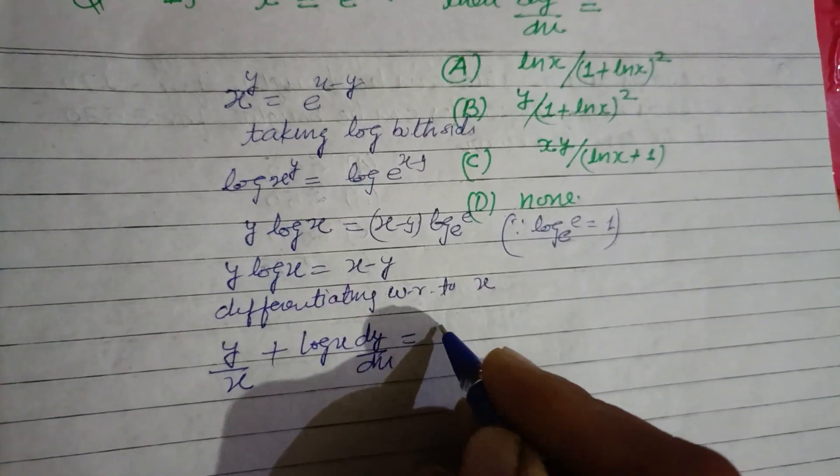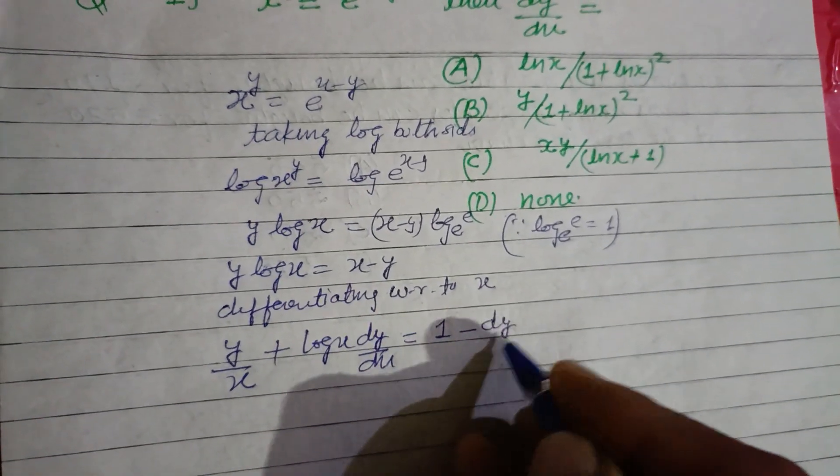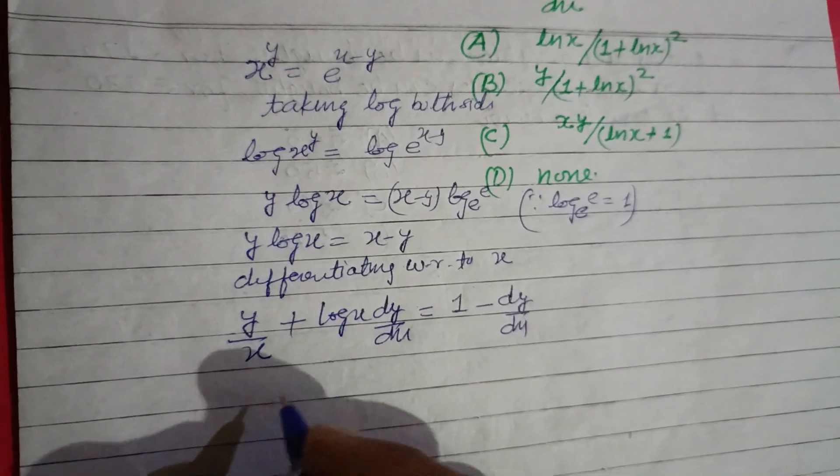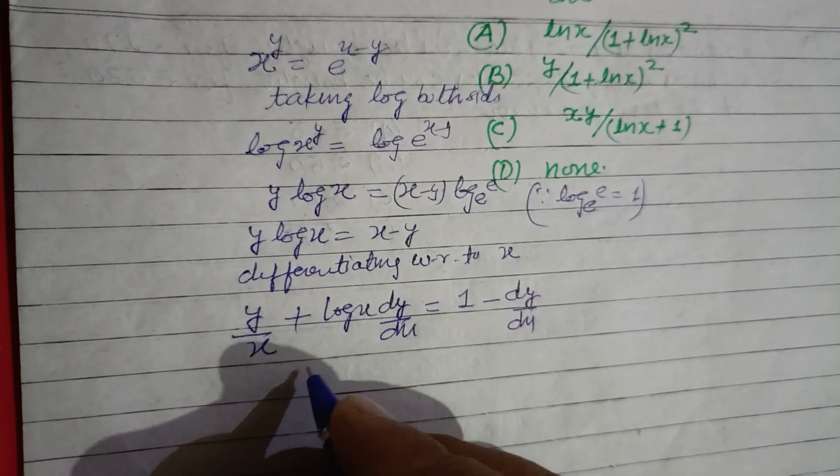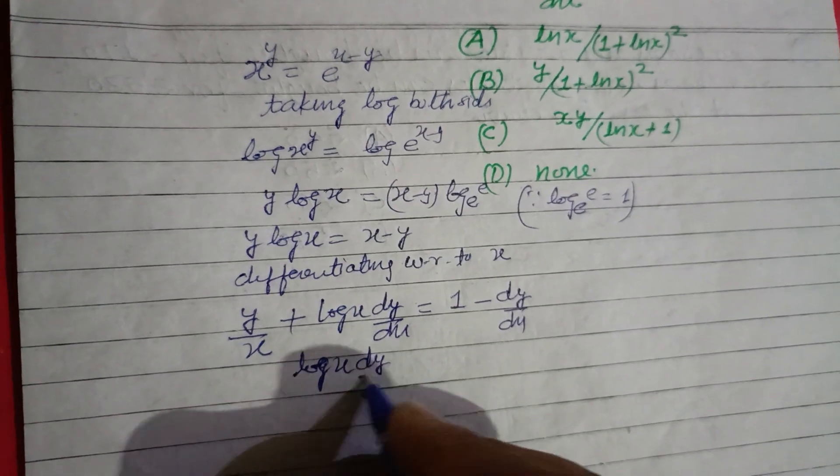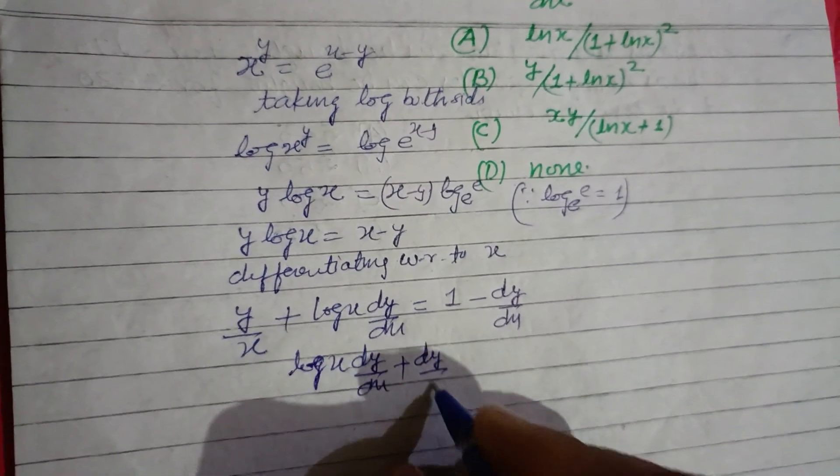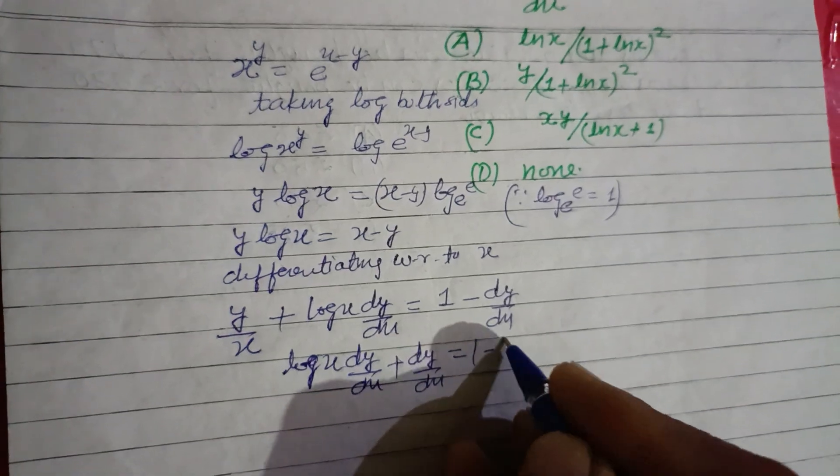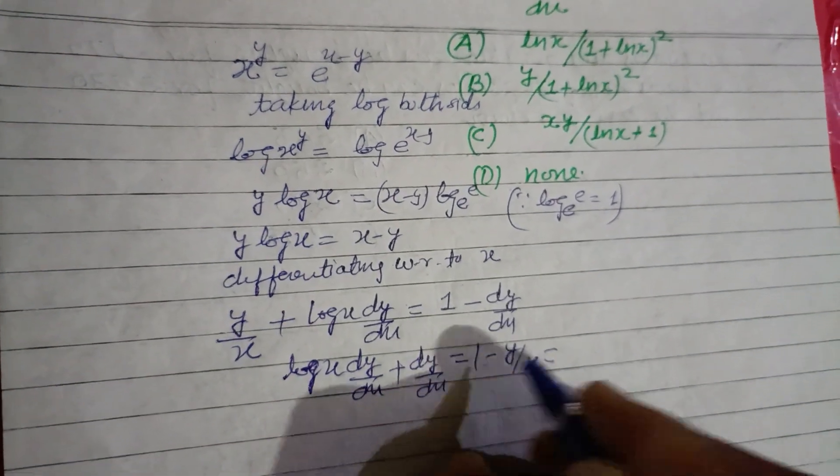Equal to differentiation of x is 1, and this is dy by dx. From here we take dy by dx to one side.